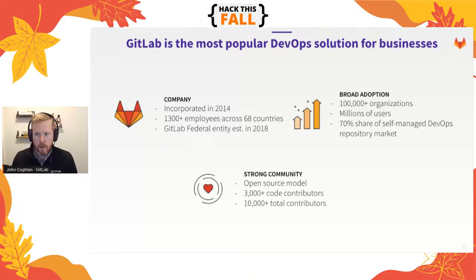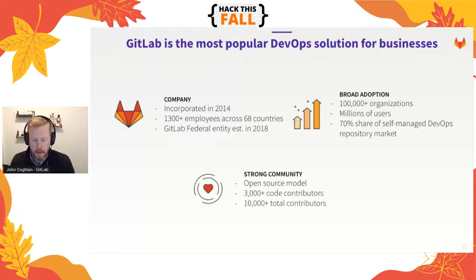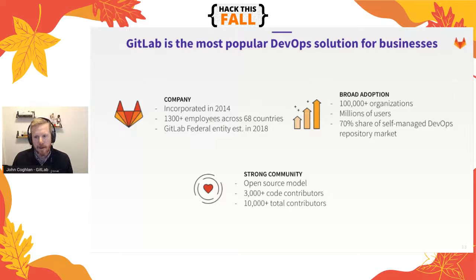GitLab is the most popular DevOps solution for businesses. We have more than 100,000 organizations using our software. We're an open core company, so we have an open source version available for everyone to use for free. I'd love for folks to try it out during Hack This Fall and host your project on GitLab.com. We have 3,000 code contributors and more than 10,000 folks in our community contributing regularly — whether that's code, attending meetups, or other activities. The company itself has been growing really fast and it's been a great place to be over the last few years.